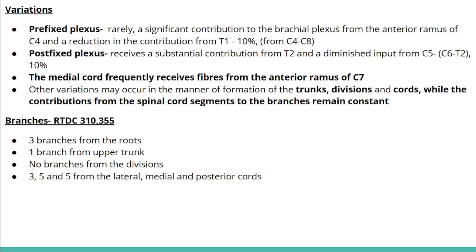There are some variations from the typical arrangement of the brachial plexus. One is the prefixed plexus, which happens rarely — in about 10% of the population. In this case, there is a significant contribution from the anterior ramus of C4 and a reduction of contribution from T1. Therefore, in a prefixed plexus, the brachial plexus consists of contributions from C4 to C8.